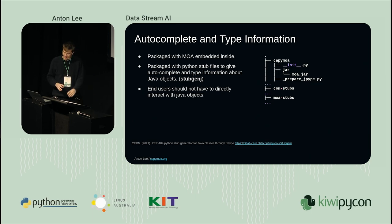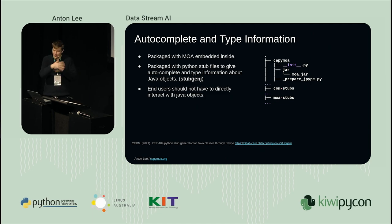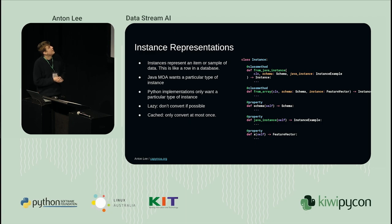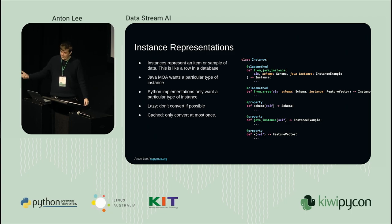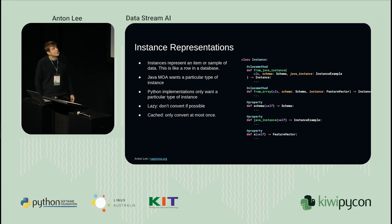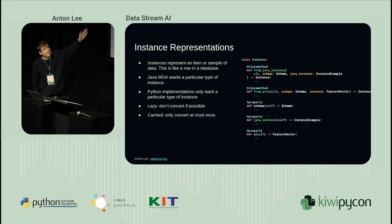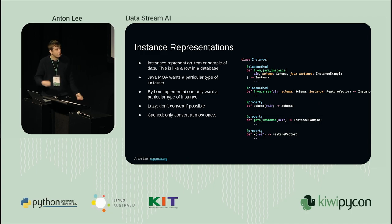End users probably shouldn't be interacting with the Java directly because it still has some sharp edges, and we're doing a lot of work to shave them away in the main API. One of the technical solutions we have to come up with is that Java algorithms and Python algorithms want a slightly different data format. So this is our instance class - just an item of data - and it has methods for creating it from the Java side and from the Python side, and then interfaces to get the instance in either format.